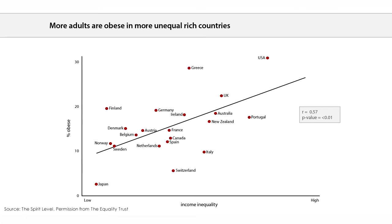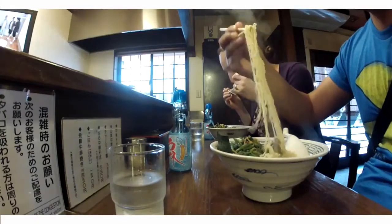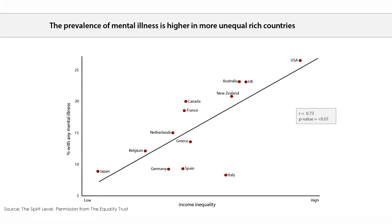Even when you look at something like obesity, this income gap seems to have an effect. Japan shows very low levels of overweight and obesity, whereas the United States shows much higher levels. There are other factors influencing overweight and obesity, such as traditional diets, but the fact that unequal societies tend to have worse health indicators is reinforced whichever health indicator you take. Mental illness is also much more highly prevalent in more unequal rich countries compared to more equal rich countries. Social stability and social conflict, which reflect on individual mental health, are also substantially determined by income gaps within countries.